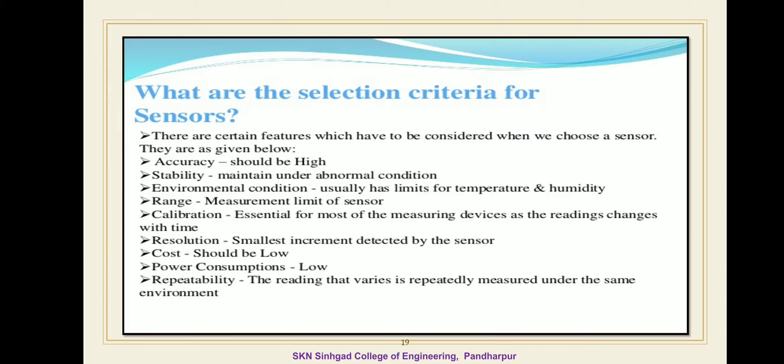Hello friends, in today's lecture we are going to discuss different selection criteria for the ideal sensor. A sensor is a transducer used to make measurement of a physical variable. The basic function of a sensor is to measure some features of the environment, such as light, sound, and pressure, and convert that measurement into an electric signal, usually as a voltage or current signal.